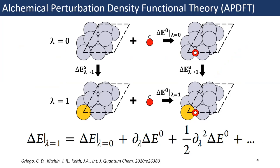Here I'd like to introduce Alchemical Perturbation Density Functional Theory, APDFT, as a way to generate many predictions on many compositions of catalyst alloys. What we do with this method is consider a reference binding energy calculation on a simple reference catalyst, and figure out how to calculate the way the binding energy changes when some perturbation is made to our reference — such as one of the atoms on the surface being transmuted to another atom that's a neighbor on the periodic table. We can approximate this perturbation using a Taylor series expansion.